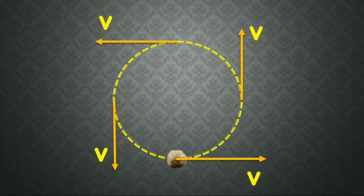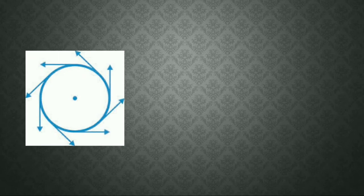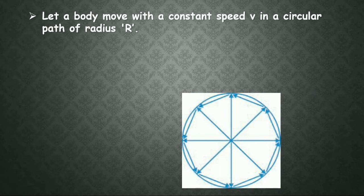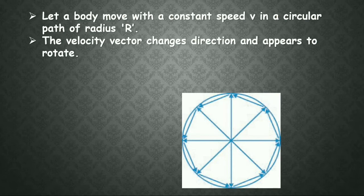That means velocity is continuously changing at every point along the path. The arrow marks represent the direction of velocity. When there are n spots, they form a polygon. Let a body move with a constant speed v in a circular path of radius r. The velocity vector changes direction and appears to rotate. At each and every point the velocity direction changes.